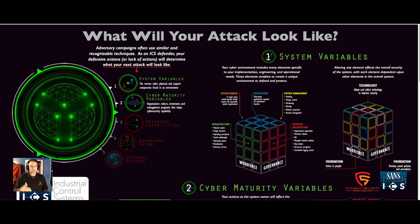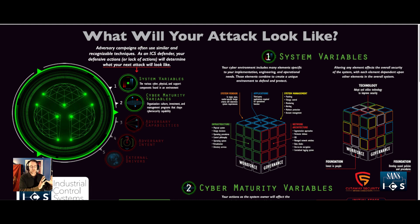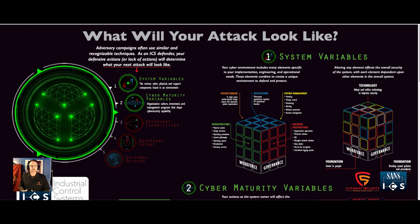As you can see in the video right now, number one are the system variables. When we're talking about our control networks, we're not just talking about control networks — we're talking about all of the things that make them up. We also have a corporate network, physical security, and all of the organization that goes into deploying our control networks. We've got vendors, integrators — these are all of our system variables.